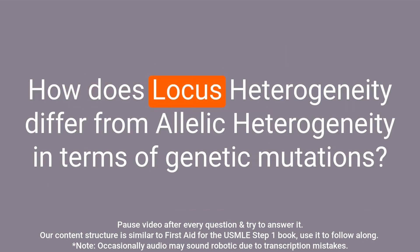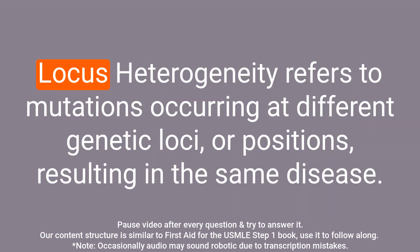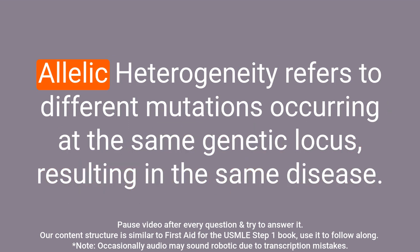Question: How does locus heterogeneity differ from allelic heterogeneity in terms of genetic mutations? Answer: Locus heterogeneity refers to mutations occurring at different genetic loci or positions resulting in the same disease, while allelic heterogeneity refers to different mutations occurring at the same genetic locus resulting in the same disease.